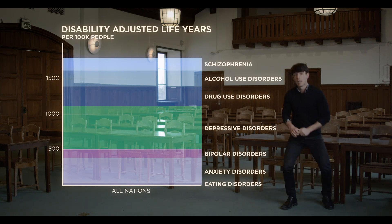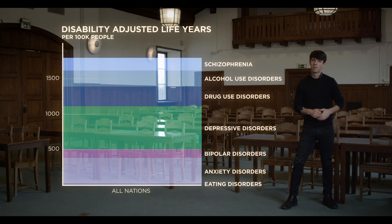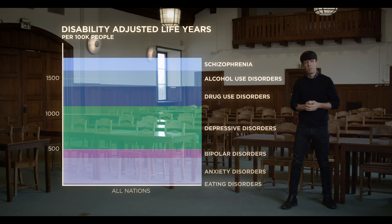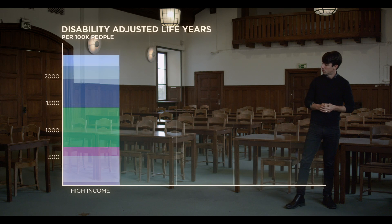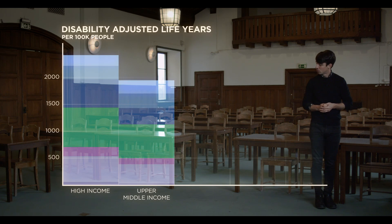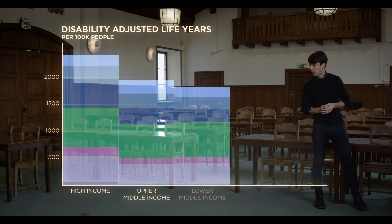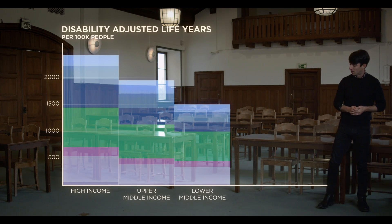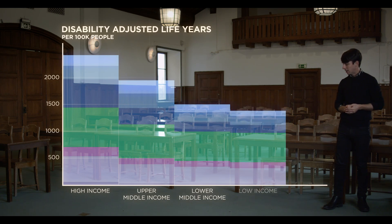This is how the global burden of disease — that is, how much people are suffering — is distributed among high-income nations, upper-middle-income nations, lower-middle-income nations and low-income nations.